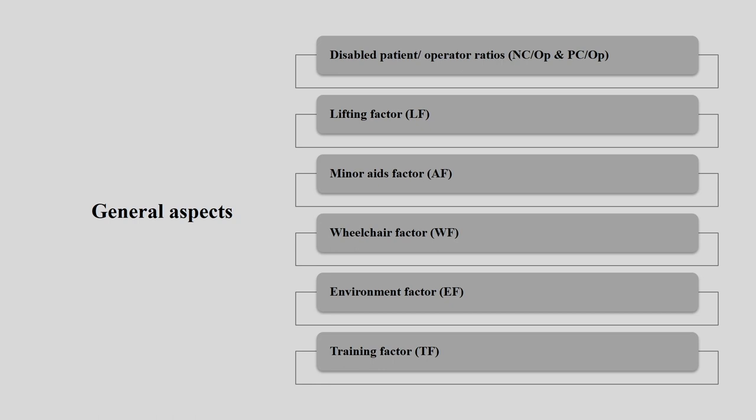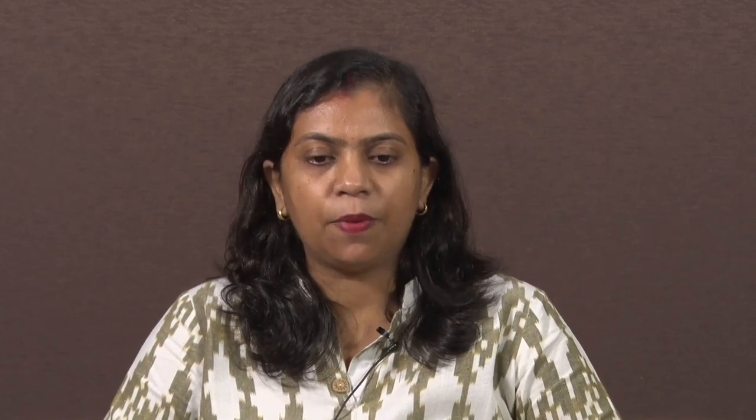Before we start any investigation from the MAPO perspective, you need to categorize how many patients there are and what is their category — how many are non-cooperative and how many are partially cooperative. The second part is lifting factor. Then minor aids factor, then wheelchair factor — because we are talking about movement from one place to another for patient handling. Then environmental factor and training factor.